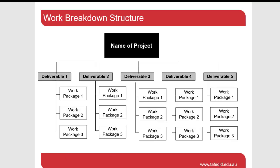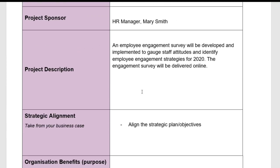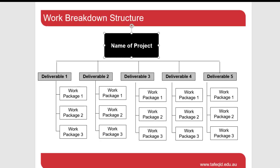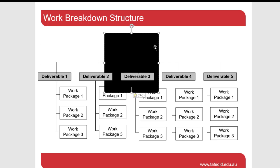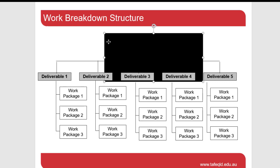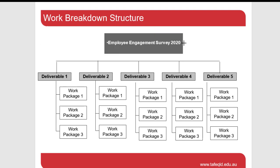First we need a name for the project. Going back to our original document, our project name is Employee Engagement Survey 2020. I'm going to copy that and paste it into the template. Now we know the project we're working on — I just need to format this slightly to get our main project title.